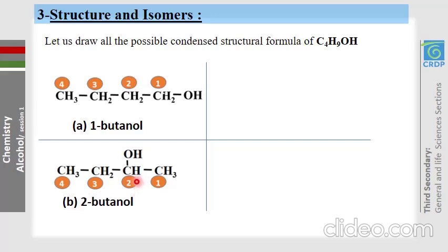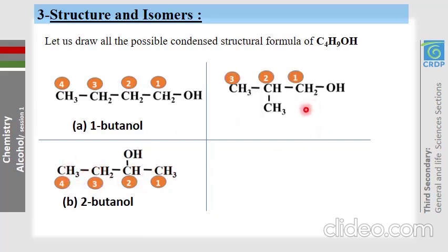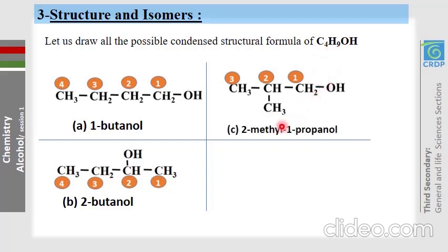Now draw a main chain with only 3 carbon atoms and place the fourth carbon as a branch. This molecule is an isomer of 1-butanol and 2-butanol. Place OH on carbon number 1 and name it: it is 2-methyl-1-propanol.